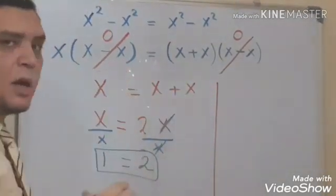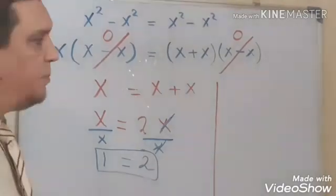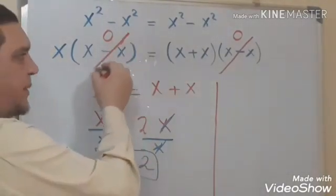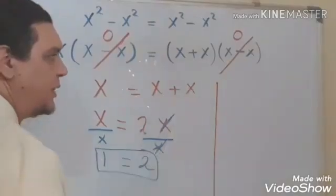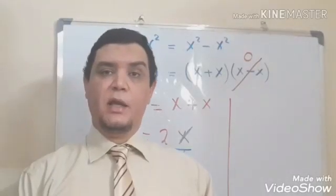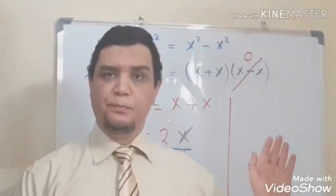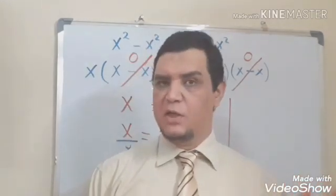This is the wrong step. Because we cannot simplify this bracket with this bracket. So the trick in this operation, we cannot simplify by 0.